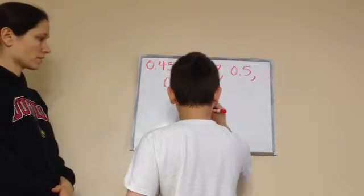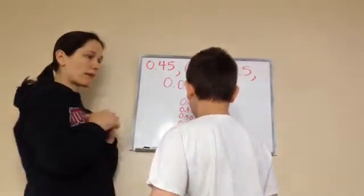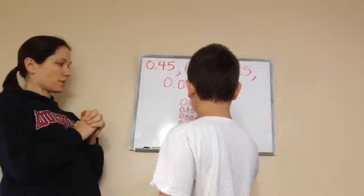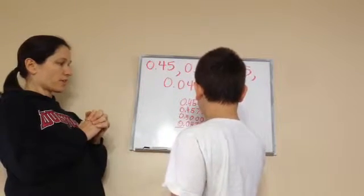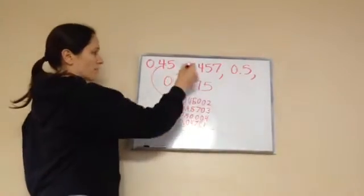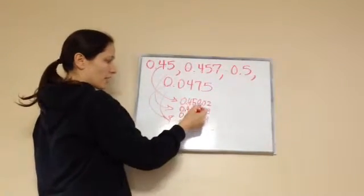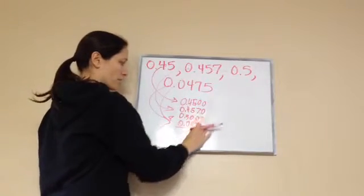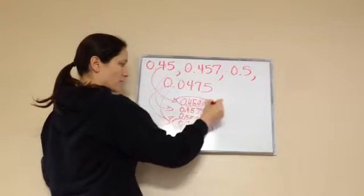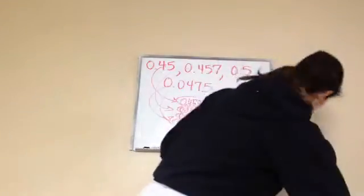Very good. Now order them from least to greatest — put a one by the smallest, a two by the next, then three and four. Excellent! He took all the numbers, brought them down, lined up the decimals, filled in everything else with zeros, then ordered them from smallest to biggest. Great job!